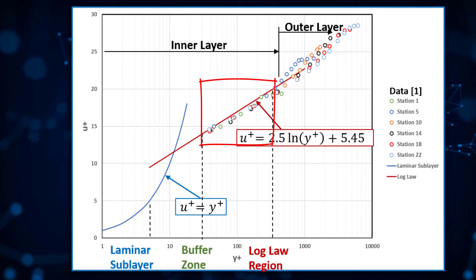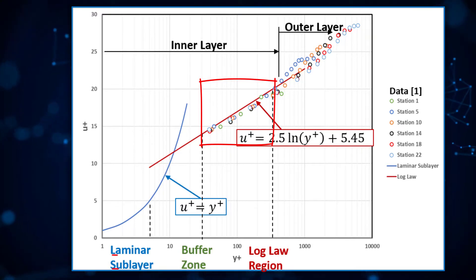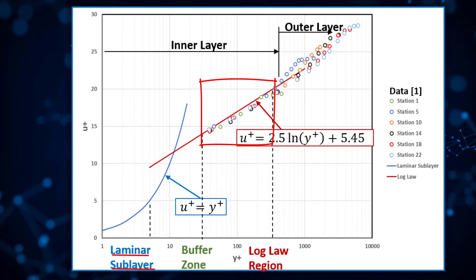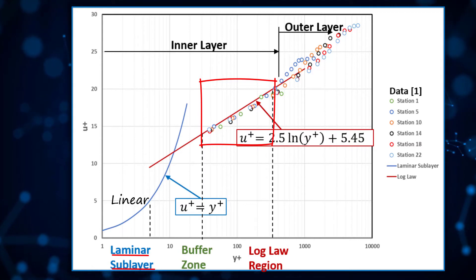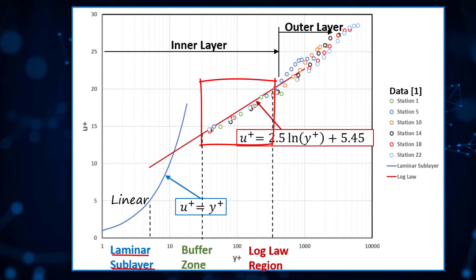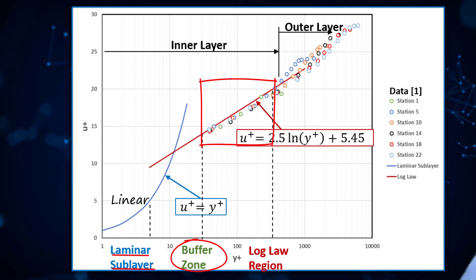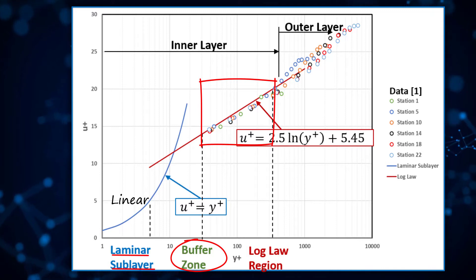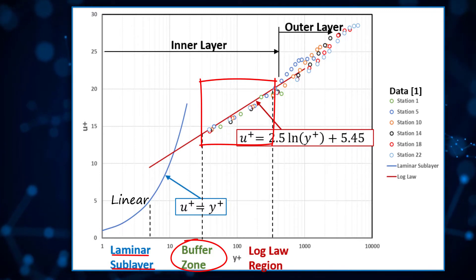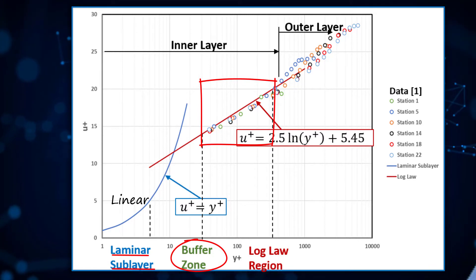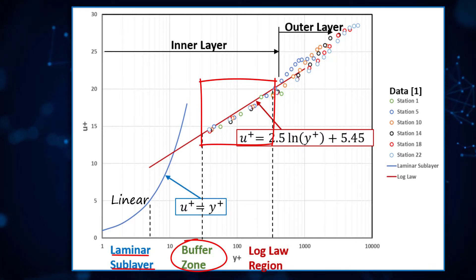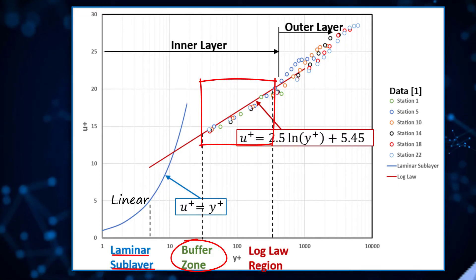In the region very close to the wall — the viscous sublayer, where Y+ is below 5 — the velocity profile is linear. Between Y+ values of 5 and 30, i.e. the buffer region, the velocity profile neither follows the linear nature of the viscous sublayer nor the logarithmic nature of the overlap region. It in fact adopts a smooth profile that transitions from the linear to the logarithmic character.